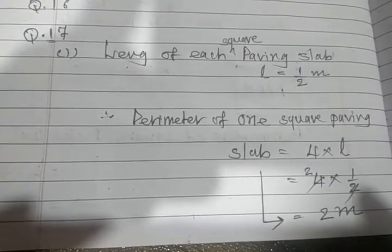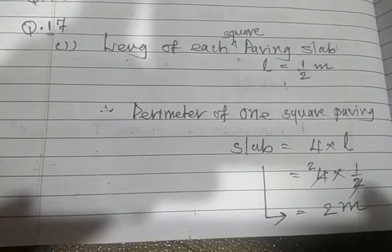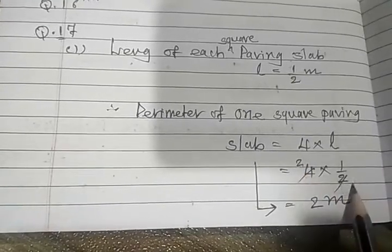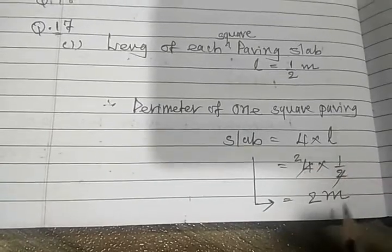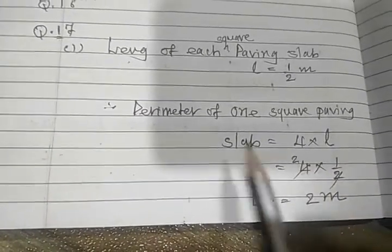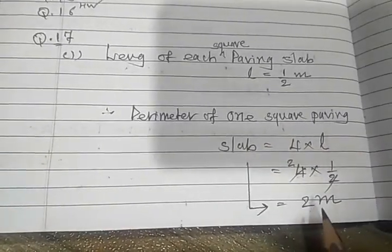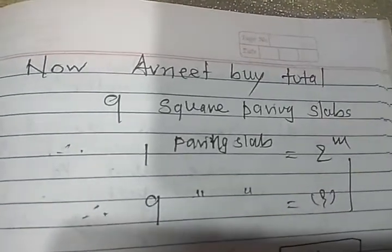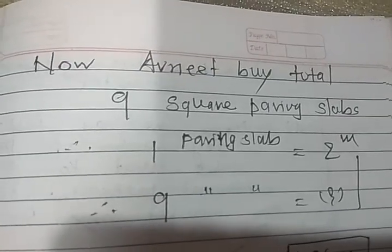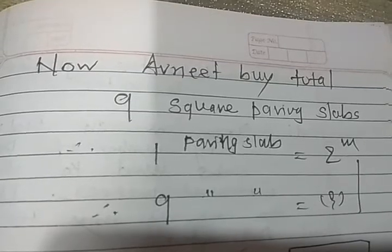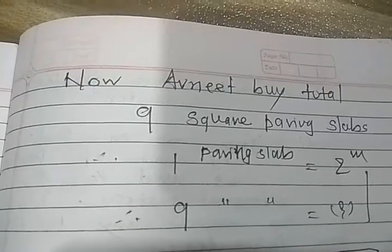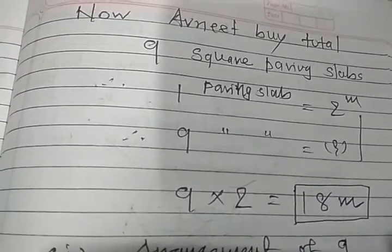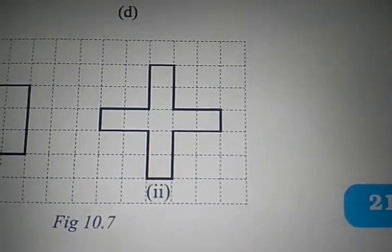First find the perimeter of one square paving slab: 4 multiplied by one-half equals 2 meters. So the perimeter of one square paving slab is 2 meters. In figure 10.71, there are 9 squares total, so Avneet uses 9 paving slabs. One paving slab equals 2 meters; therefore 9 paving slabs equals 9 multiplied by 2 equals 18 meters.